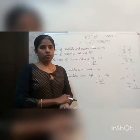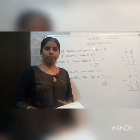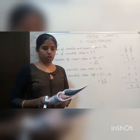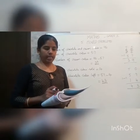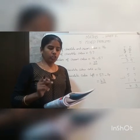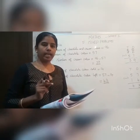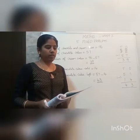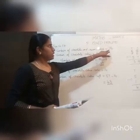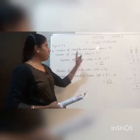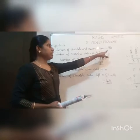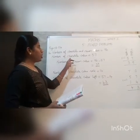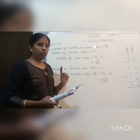Now we will do word problem number 14 on page number 54. There were 96 chocolate and cream cakes in a shop. If there were 57 chocolate cakes, how many cream cakes were there? Also, 14 chocolate cakes were sold — how many chocolate cakes were left in the shop? We have two questions to answer. Chocolate and cream cakes together total 96, and the number of chocolate cakes is 57.